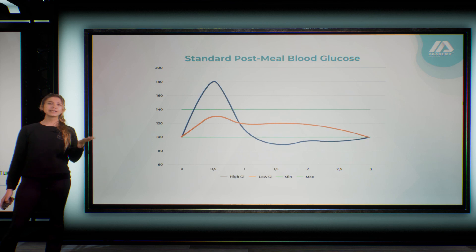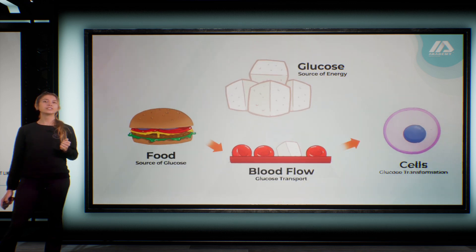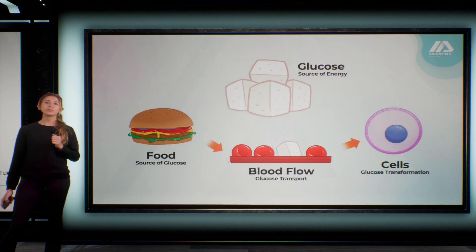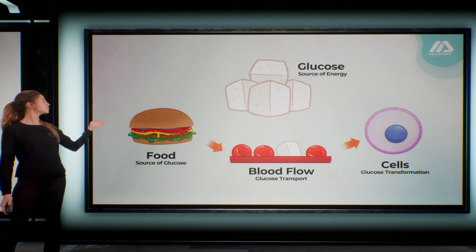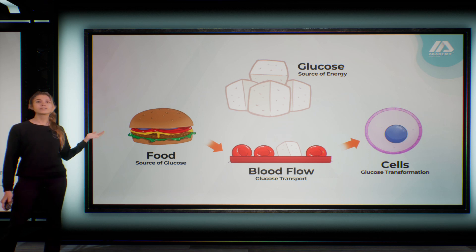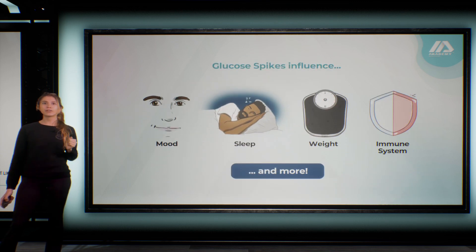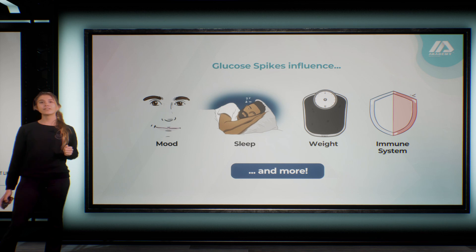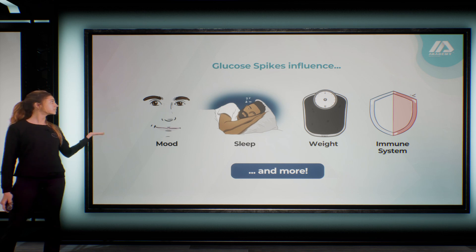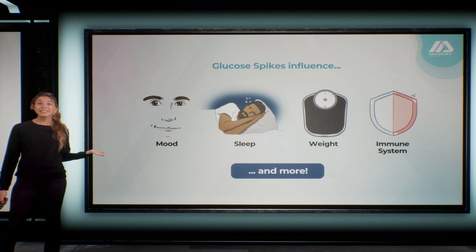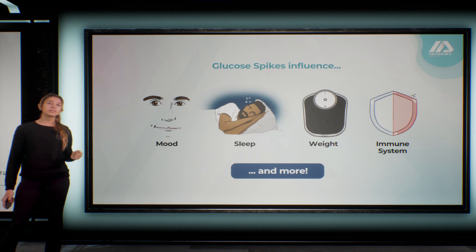First, I will quickly explain the concept of the glucose curve. Glucose is our body's main source of energy. We get most of it from the food we eat, and it is then transported into our bloodstream and into our cells. Its concentration can fluctuate wildly throughout the day, and sharp increases in this concentration — the so-called glucose spikes — affect everything: from our mood, to our sleep, to our weight, our skin, and even the health of our immune system.